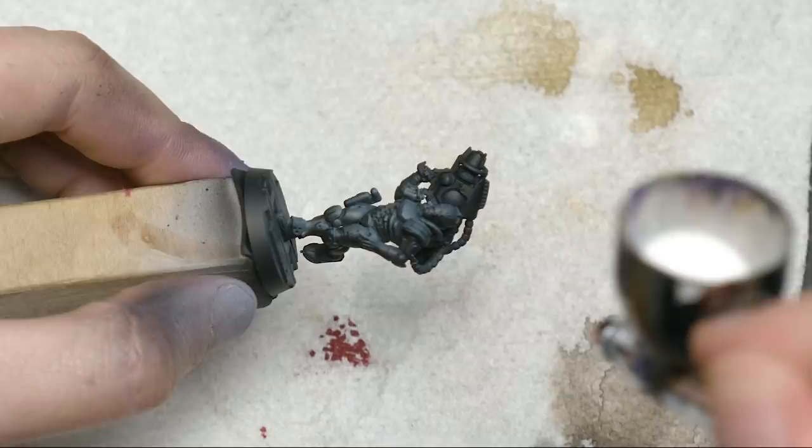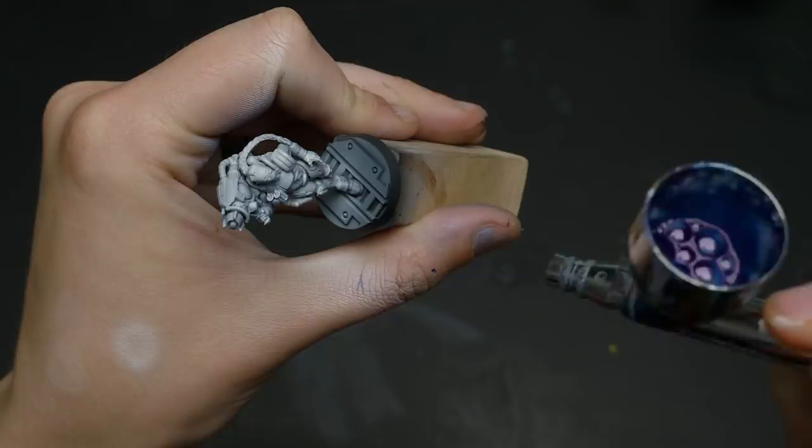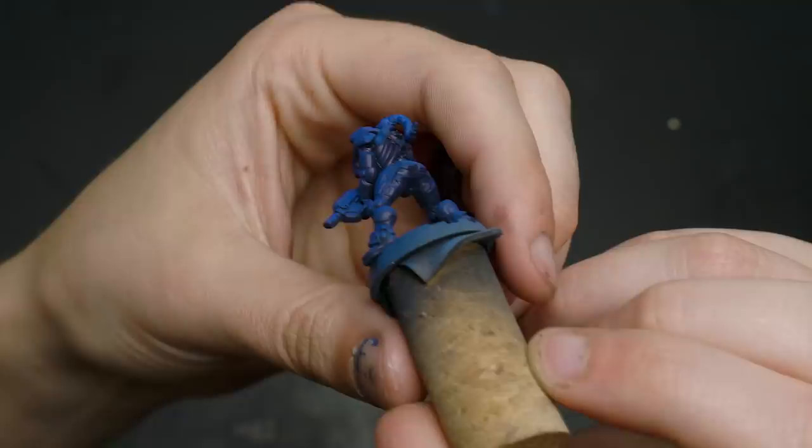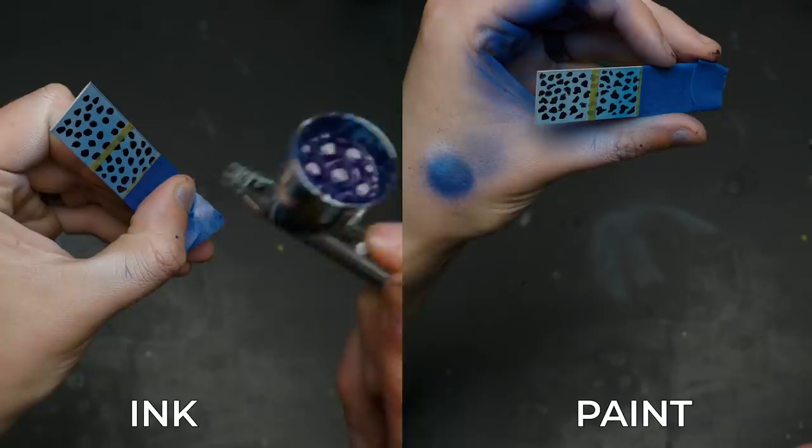Number one ink has intense saturation of color without coverage. If I have a pattern on my model that I want to tint with color I can do that with ink without obscuring the texture below. An example of this would be a zenithal undercoat. I have a gradient of white to black on my model and I want to maintain that while also giving some color to the miniature.